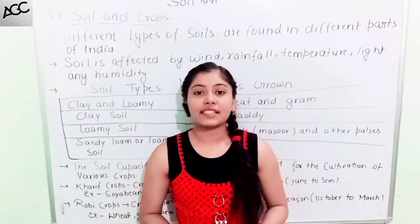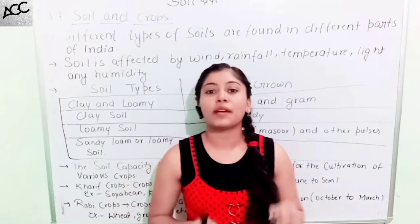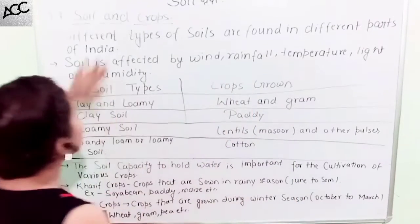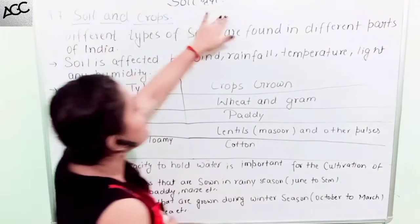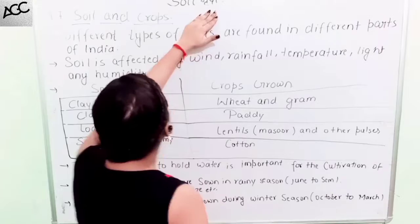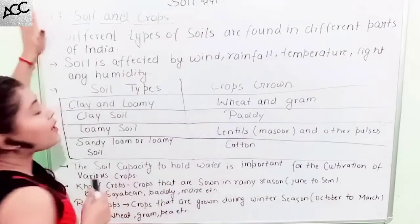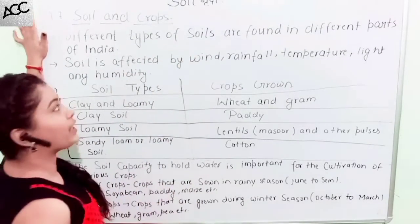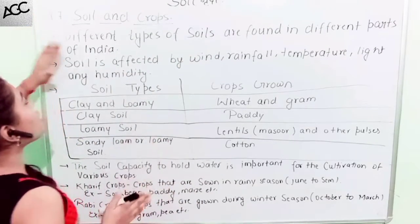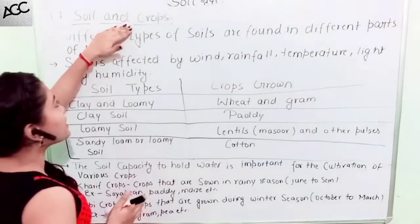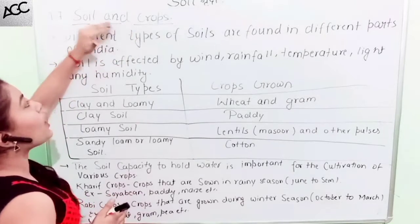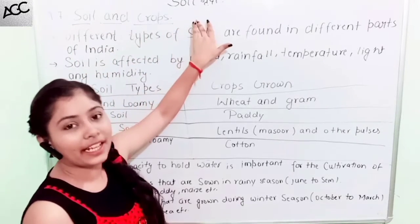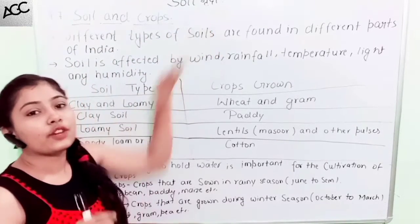In this video, we are going to talk about EGC classes, Class 7, Chapter 9 — Soil. In this video, we will talk about topic 9.7: Soil and Crops. So, let's start the video without wasting time.